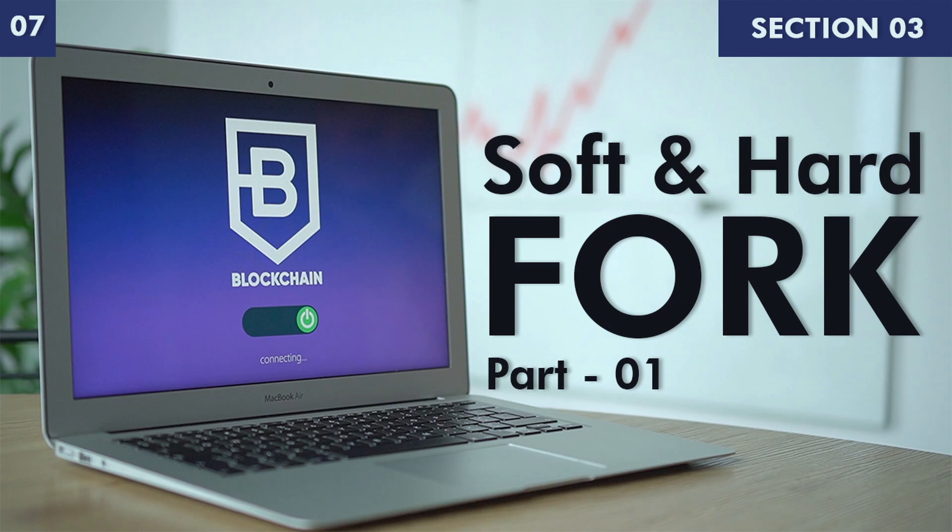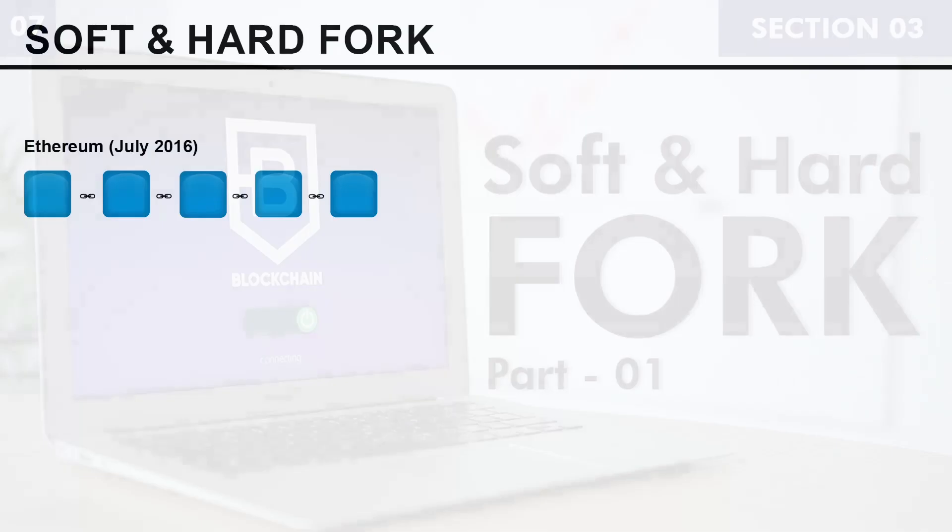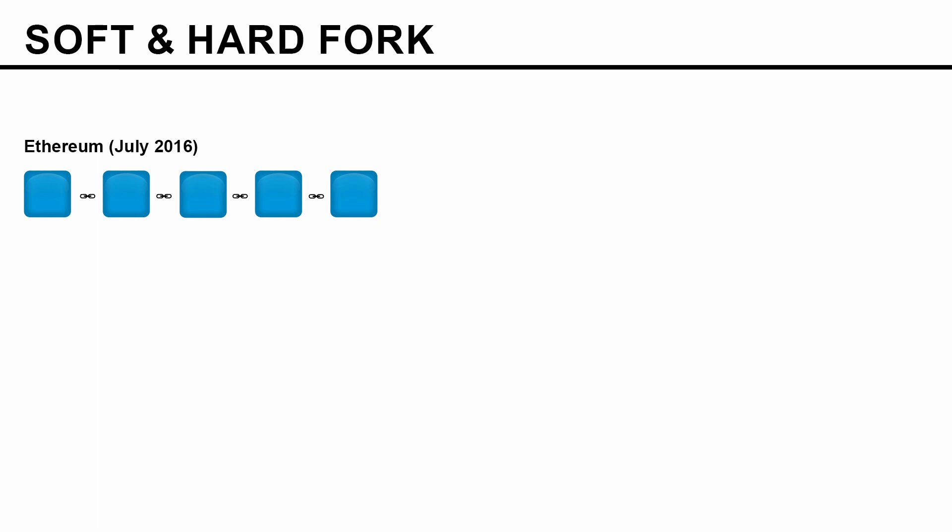In this video we will learn how it works. Back in July 2016, at block number 1,919,999, Ethereum introduced a new rule that allowed them to reverse the logic in the smart contract that had allowed the attacker to steal Ether, as seen in the DAO attack video. After that it turned into a hard fork.